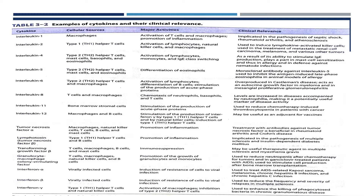Interferons alpha and beta are produced from virally infected cells and activate induction of resistance of cells to viral infection. They are used to treat AIDS-related Kaposi's sarcoma and melanoma. Interferon beta is used to reduce the frequency and severity of relapses in multiple sclerosis. Interferon gamma is released from Th1 helper cells and natural killer cells. GM-CSF is released from T cells and macrophages, helps in promotion of growth of granulocytes and monocytes, and is used to reduce neutropenia after chemotherapy for tumors.